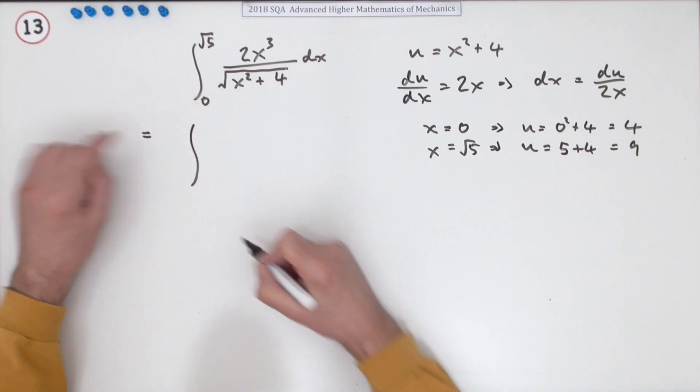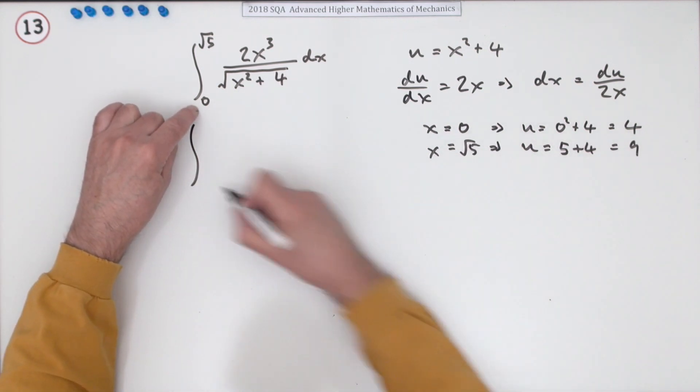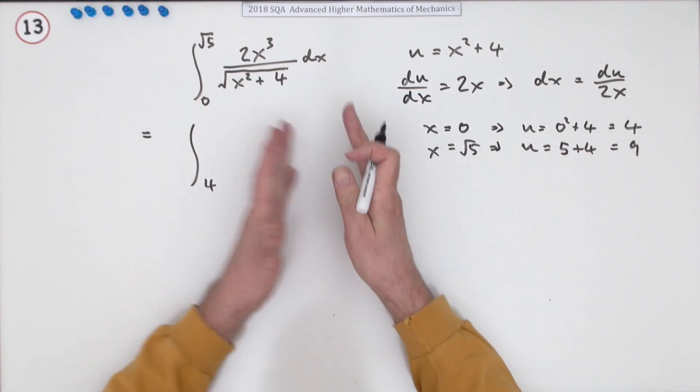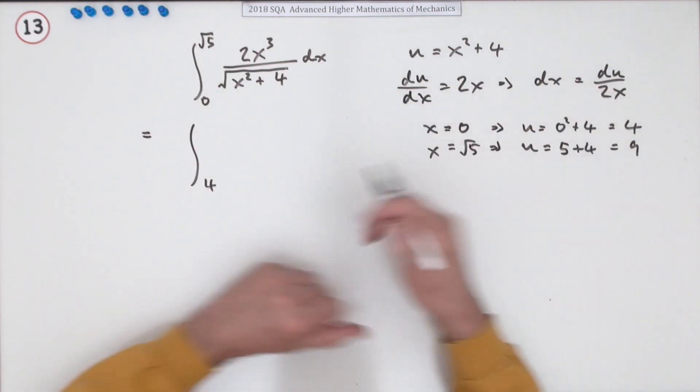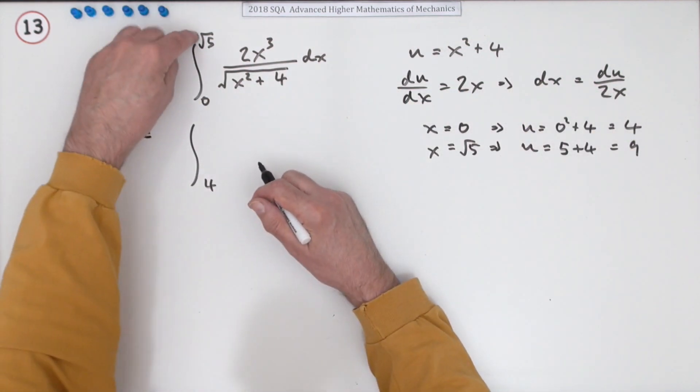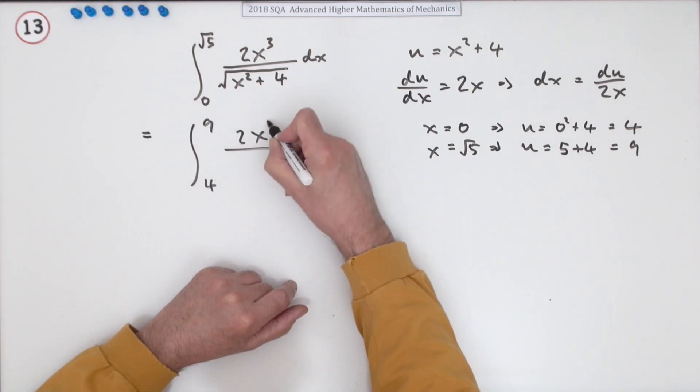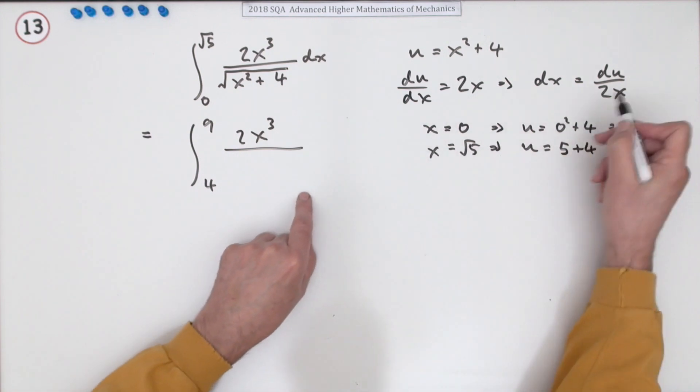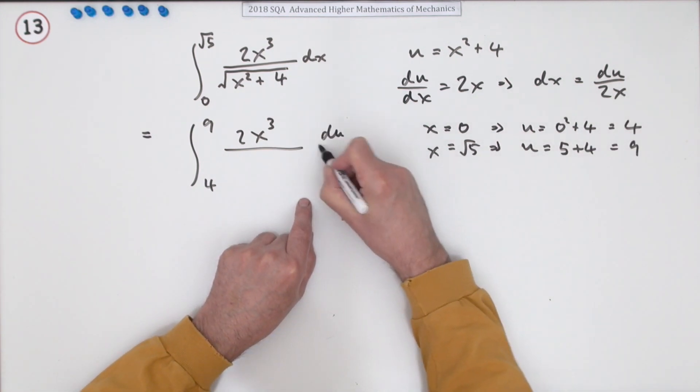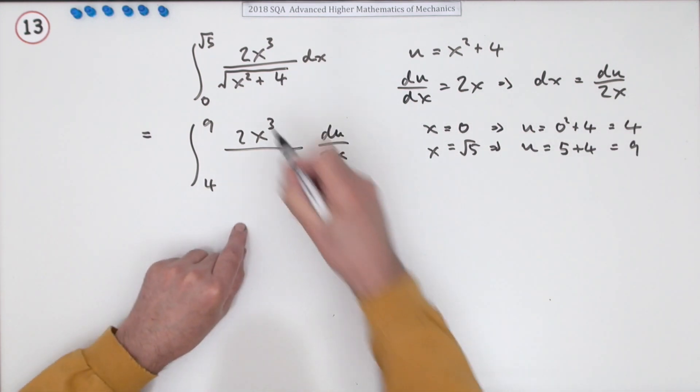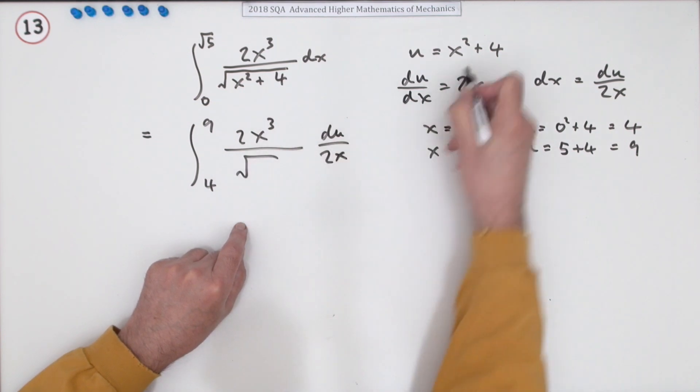Change everything. The integral from 0 (now 4) to √5 (now 9)—we're changing from x variables to u variables. The dx gets changed to du over 2x, and the bottom part is the square root of u.